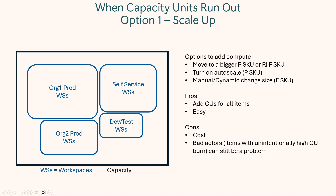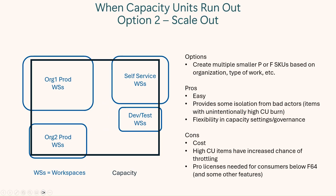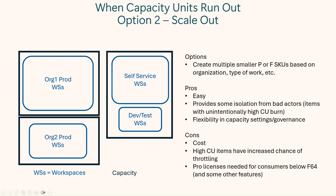You also have the option to turn on autoscale. If you have a P SKU or an F SKU, you can do this in the Azure portal and change the size pretty easily. The second option, going back to the starting situation, is to scale out — splitting the work out to multiple capacities, each of them properly sized. You can do this with P or F SKUs, though the P SKUs are on the deprecation path.